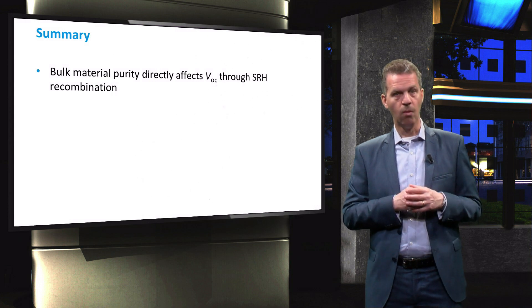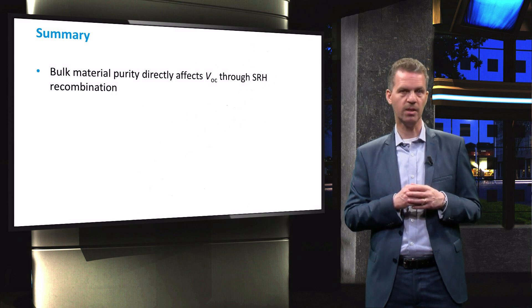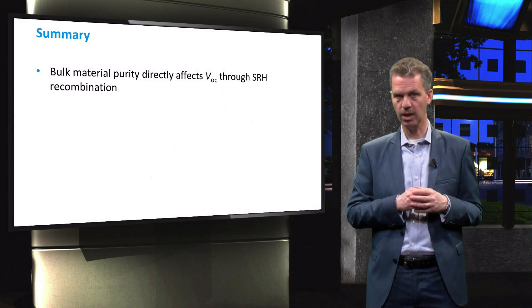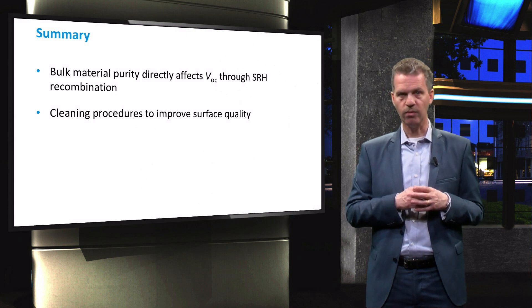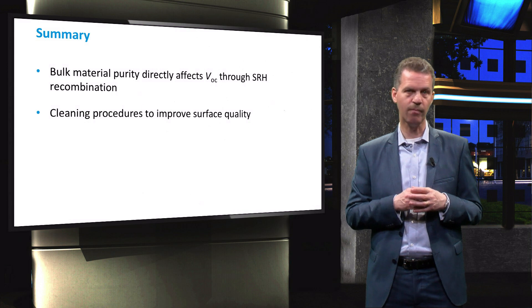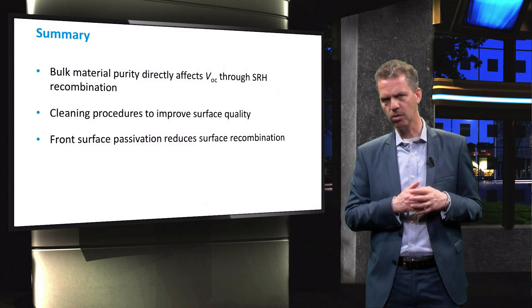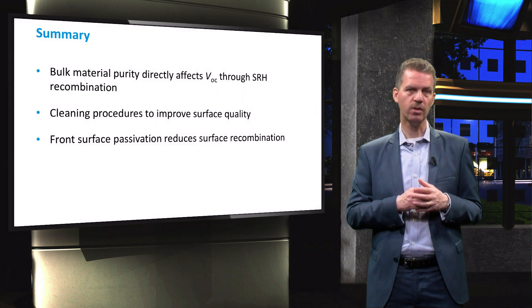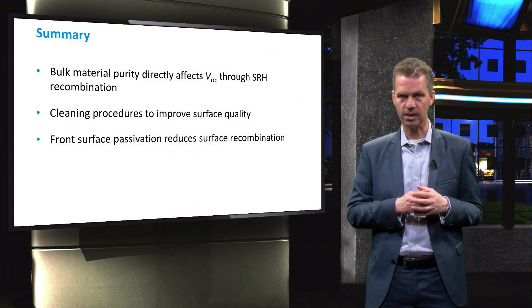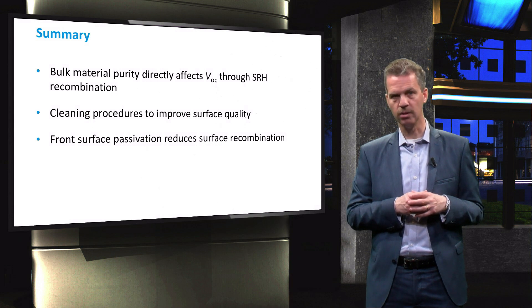To summarize, the open circuit voltage of a solar cell is directly affected by material purity through Shockley-Reed Hall recombination in the bulk of the material. The front surface of the wafer should be thoroughly cleaned to remove organic and metallic contaminants and particles, and we can passivate the dangling bonds at the surface to reduce the surface recombination velocity. In the next video, we will continue with the recombination mechanism at the metal semiconductor interface and introduce a design for efficient charge carrier collection.